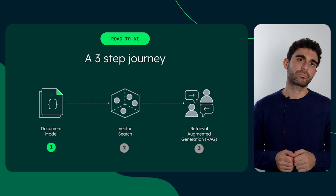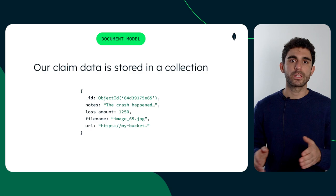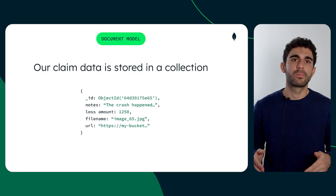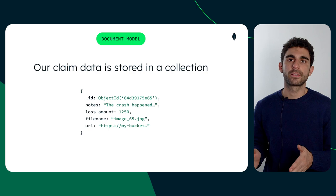The first step is to store our claim data in a MongoDB collection. In this example, our document contains information about the claim, such as the loss amount, some notes about the accident, and the reference to the photo. Now the data is easy for applications to access and query.